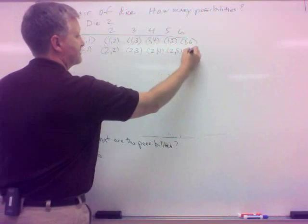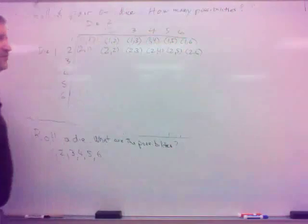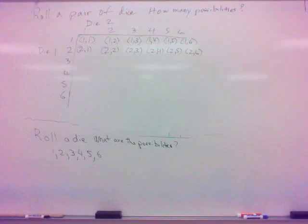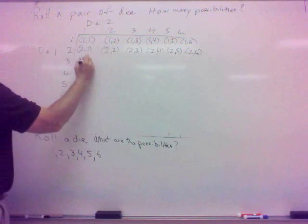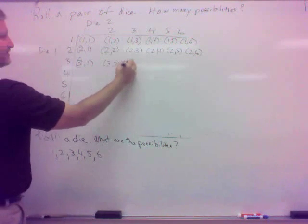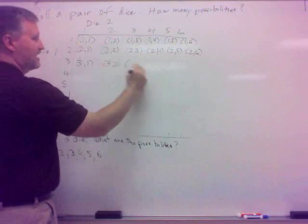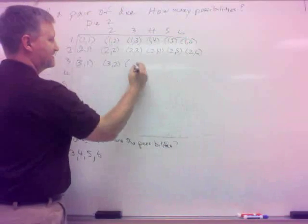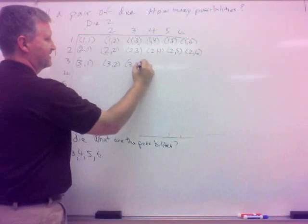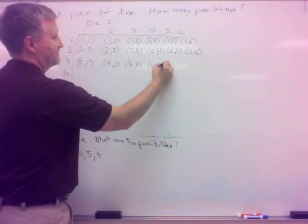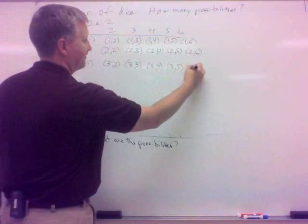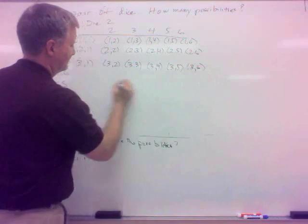Then I could have one on die one and two on die two. Then I could have one on die one and three on die two. One four, one five, one six. For the first line. Then the second line would be two on the first die, and then one, and then two, two three, two four, two five, two six, et cetera. We could do that all through there. With me? Is this okay? So how many? How many we got?